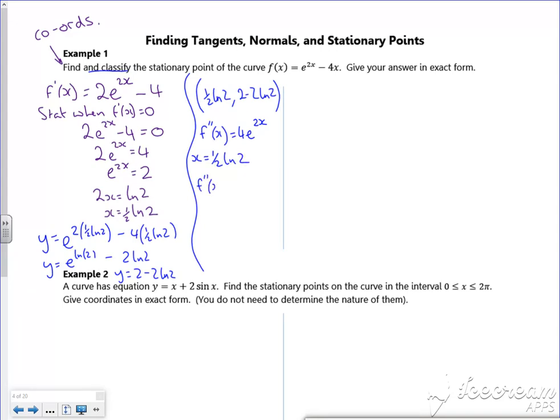So my f''(x) is 4e^(2 times my half ln2). So the 2 and the half cancel, the e and the ln cancel, I get f'' as being a value of 8. So we know, because f''(x) is greater than 0, it must be a minimum at x equals a half ln2. There we go. So that's the first example done.